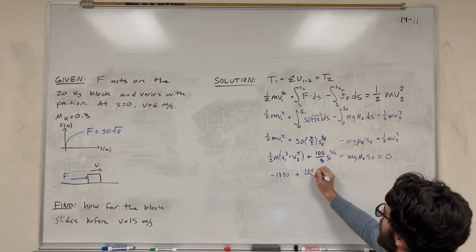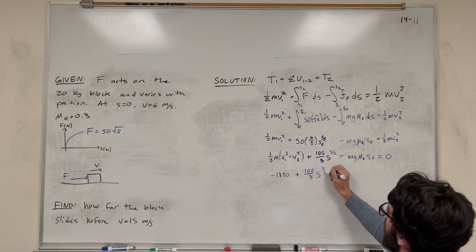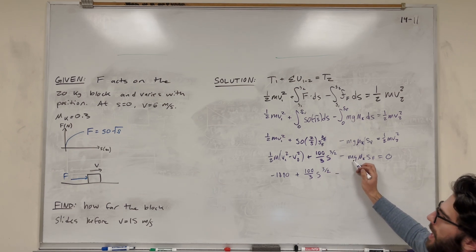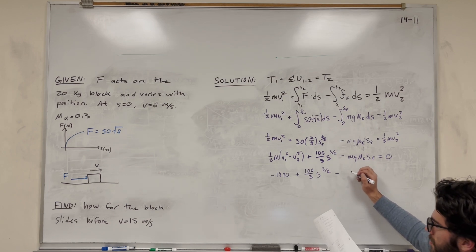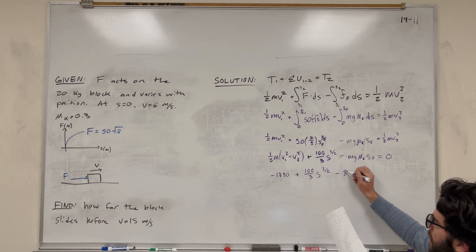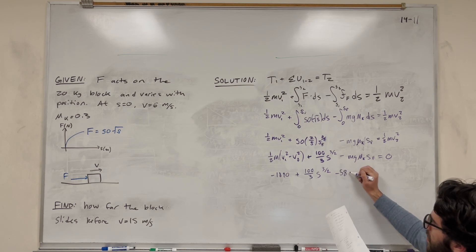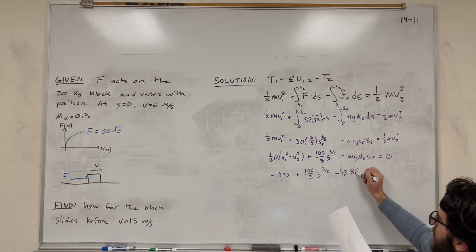This is going to stay the same, 100 over 3 s to the three-halves. And the mass again is 20, gravity is 9.81, coefficient of kinetic friction is 0.3. Do this, you get 58.86 s equals zero.